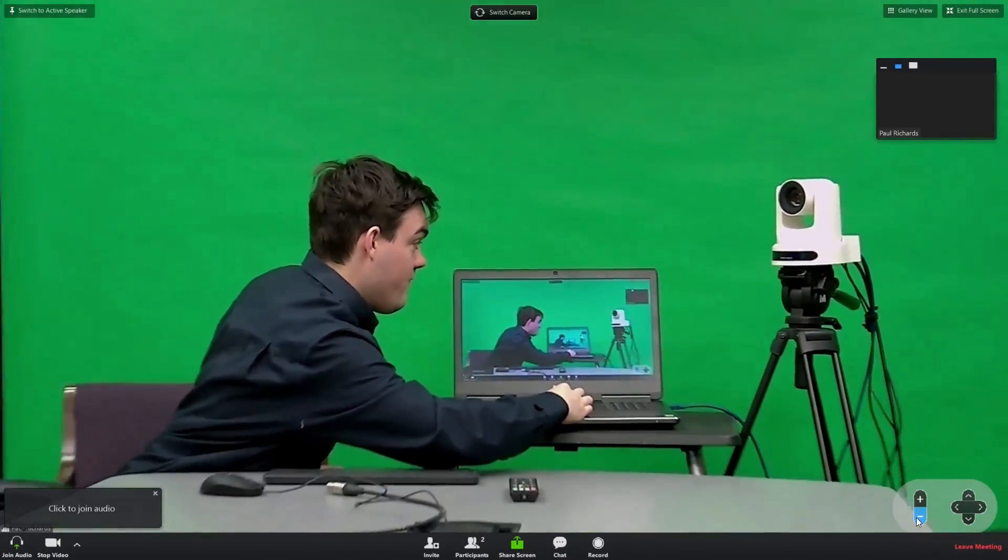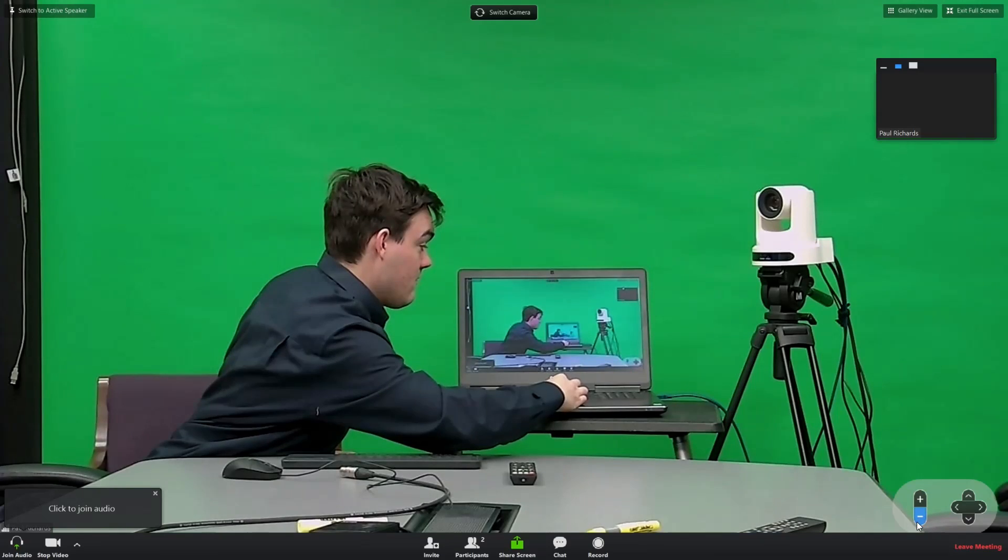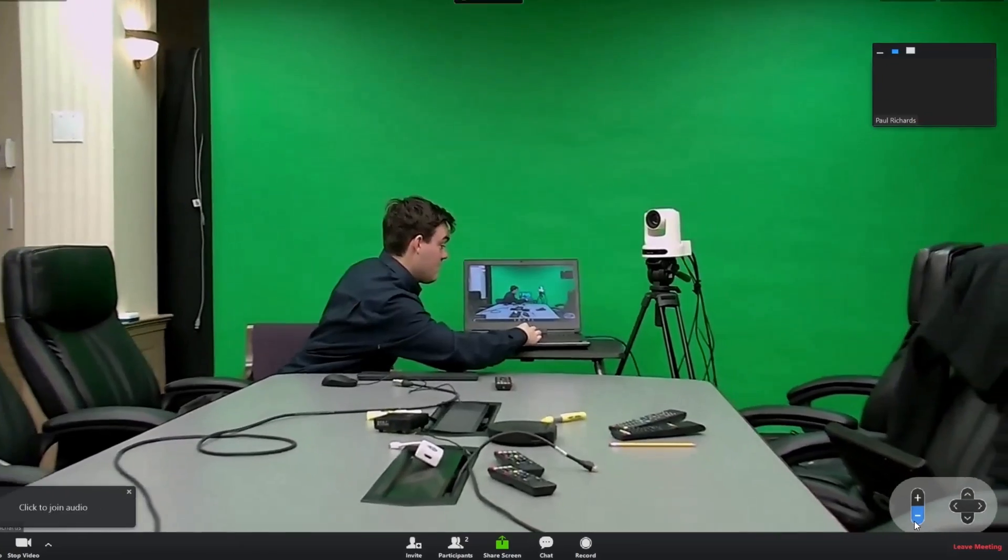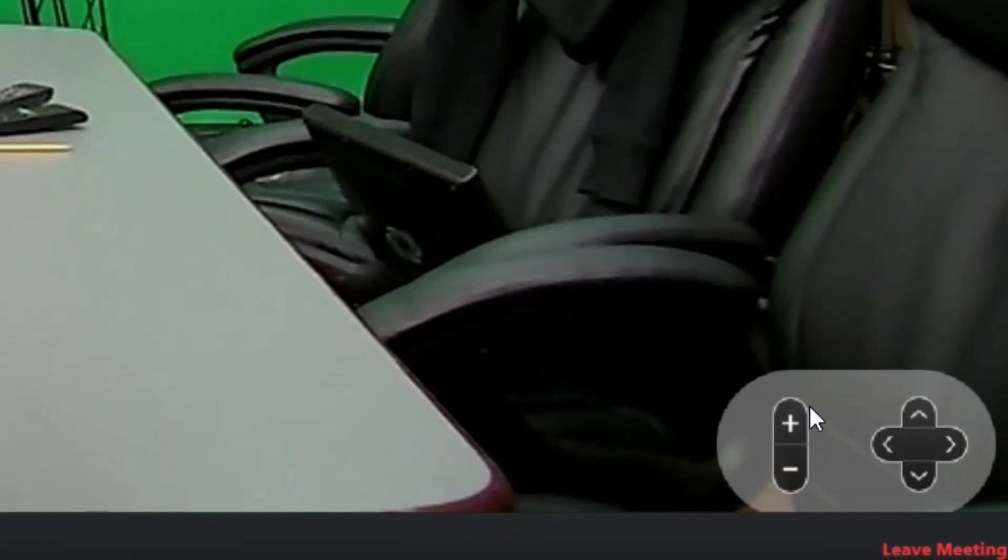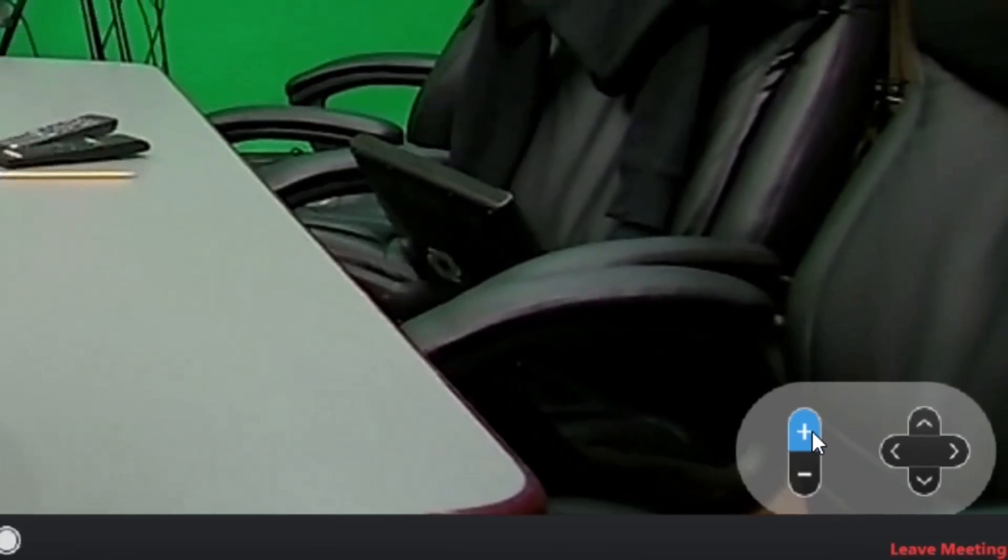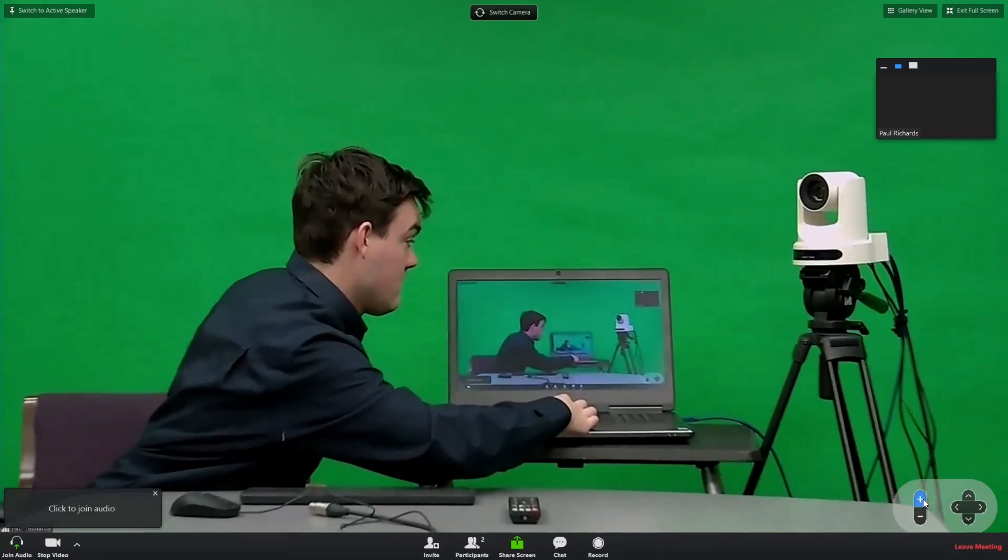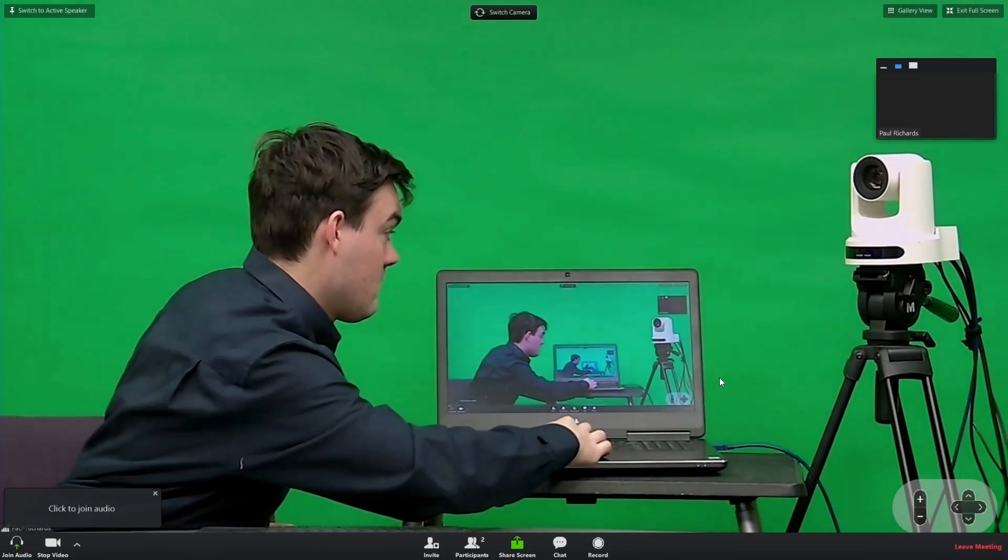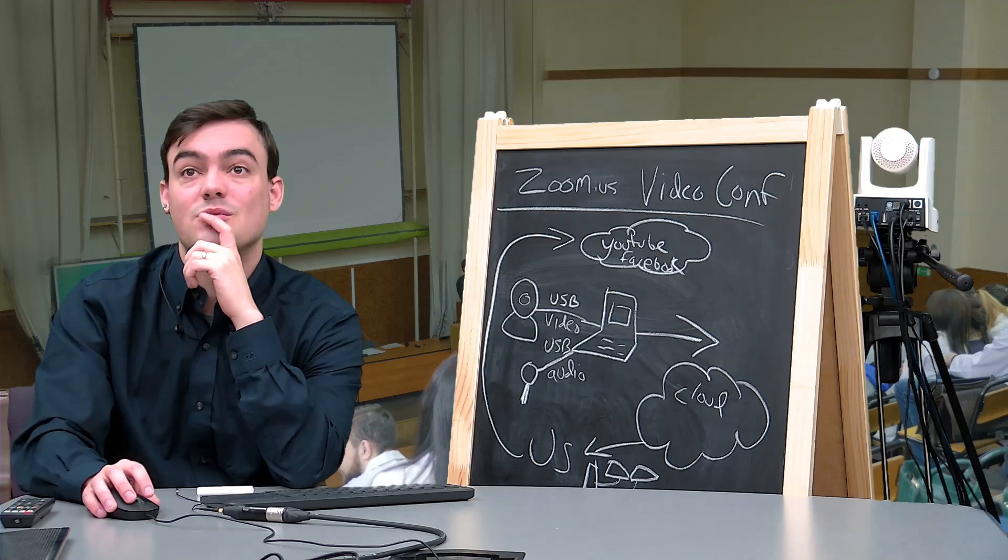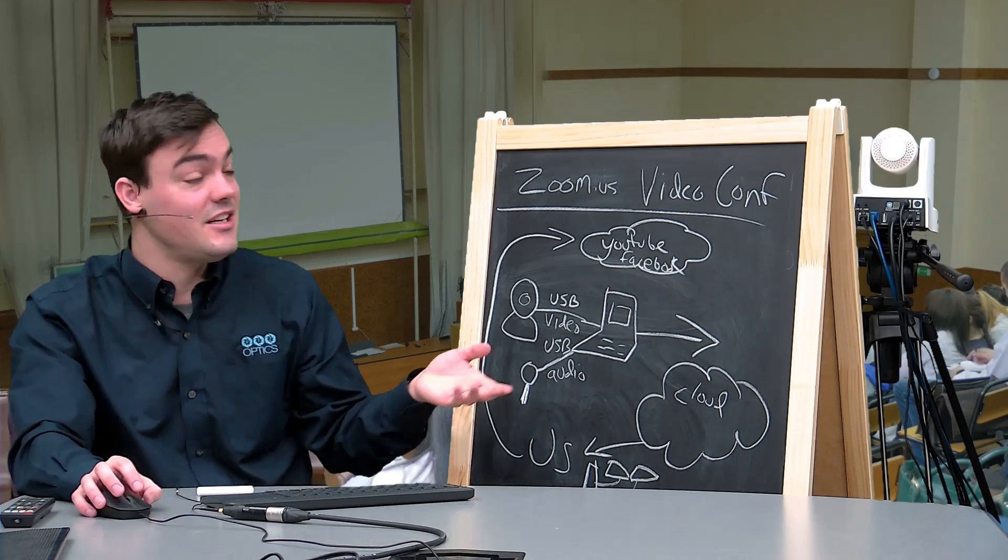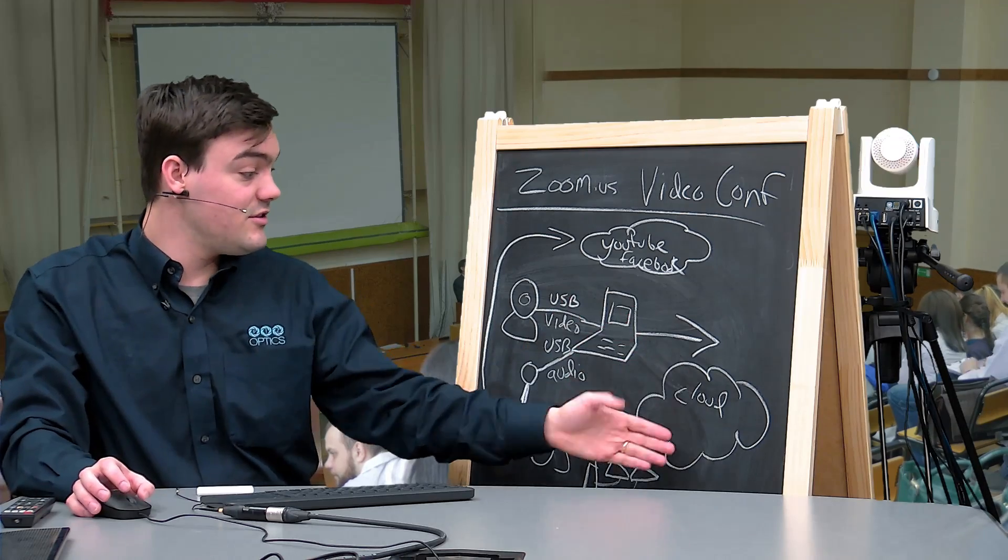See that button there? That's pan, tilt, zoom directly in Zoom video conferencing interface. How cool is that? I'm in the same room right now, but imagine you can be anywhere in the world and you're going to get these pan, tilt, zoom buttons. They're going to allow you to control the camera from anywhere in the world.